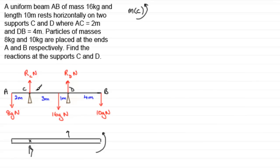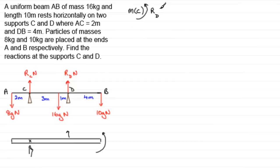So that's going to be RD multiplied by the distance back to C — that's the 1 metre plus the 3 metres, so 4 metres total. Force times the distance: RD times 4. That's that one taken care of.